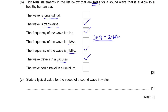Part C: State a typical value for the speed of a sound wave in water. The speed of a sound wave in air is around 340 m/s. If it's in water, it's 1500 m per second. You need to memorize these numbers.